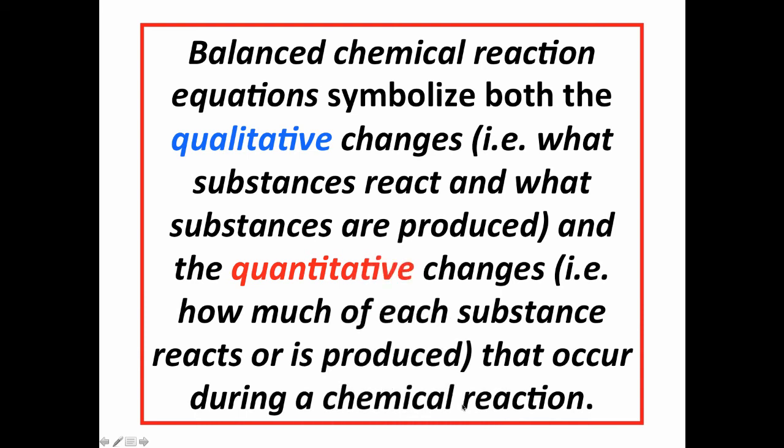Now in general, balanced chemical equations symbolize two things: the qualitative changes, in other words, what substances did we start with and what substances were produced, and also the quantitative changes, in other words, how much of each substance is produced or how much reacts when we have a chemical reaction.